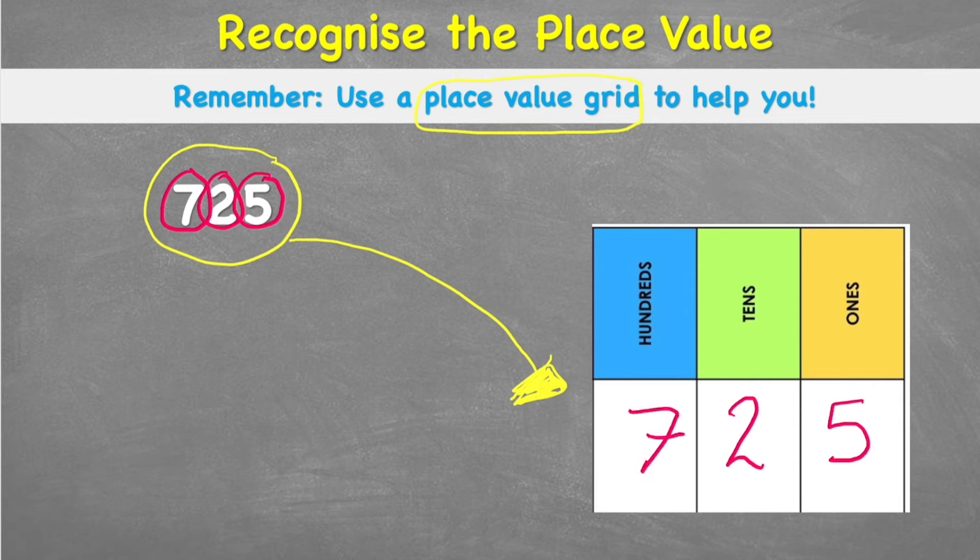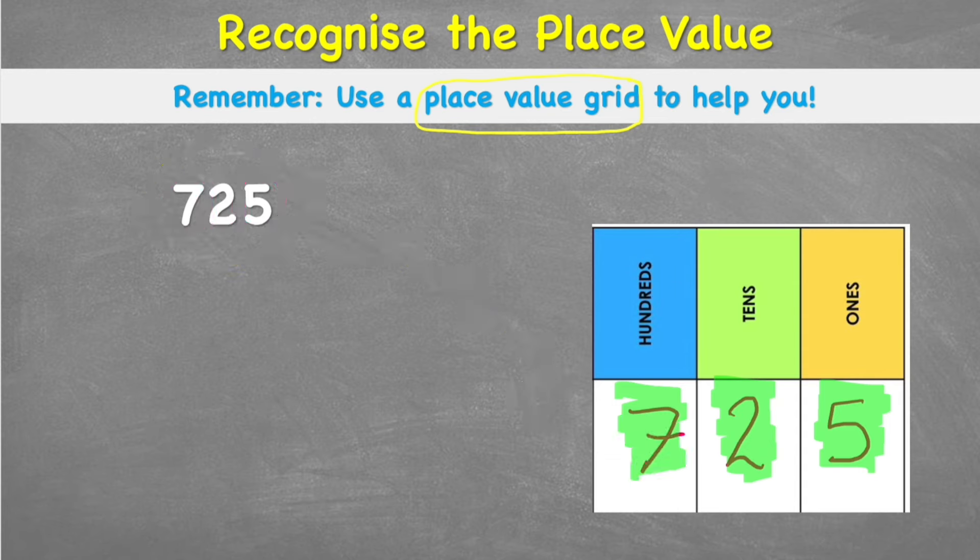Therefore, what we're saying is that we have 5 ones, 2 tens, and 7 hundreds. So therefore, another way that we could look at this number is to partition it, which means to break it into its place value parts.